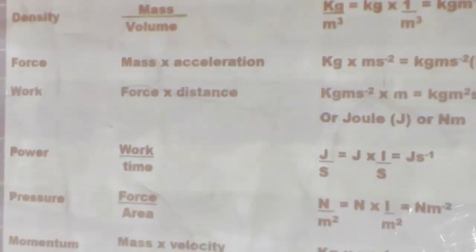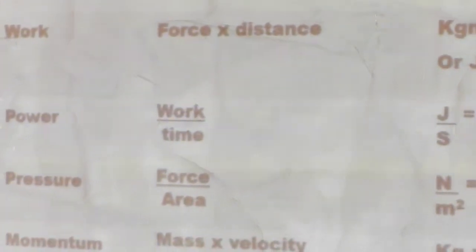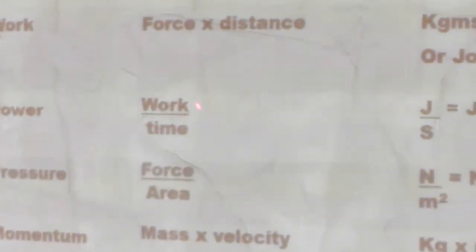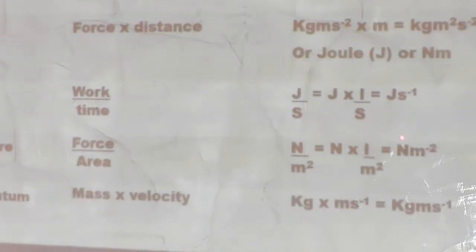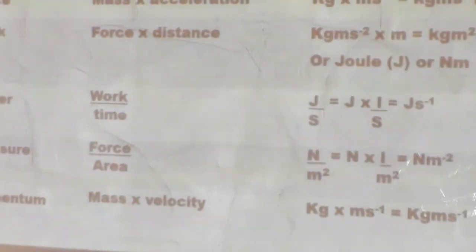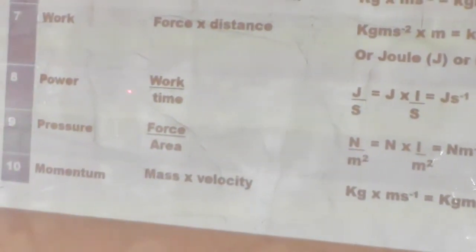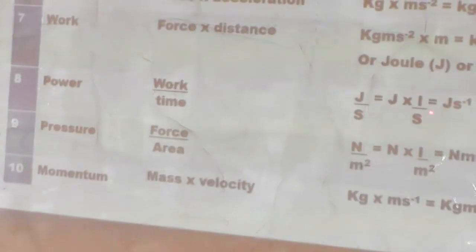Now let us look at power. Power is the rate at which work is done — that is, work done divided by time taken. The unit of work done is joule and the unit of time is second, giving joule multiplied by 1 over second, which equals joule per second. Therefore the SI unit of power is joule per second.